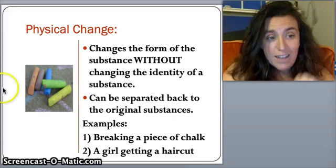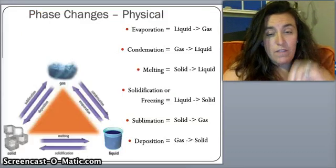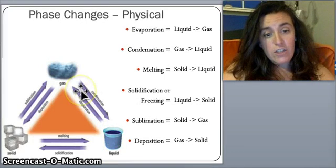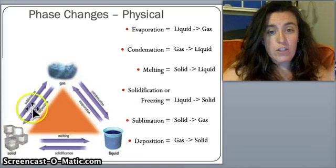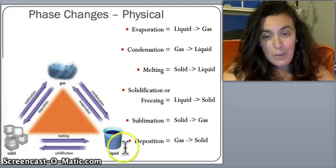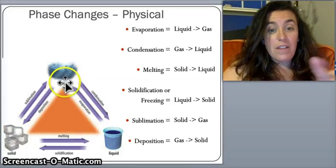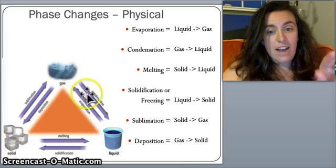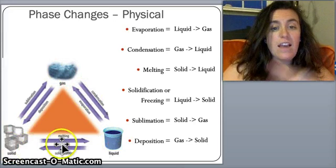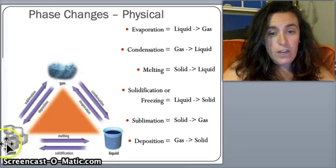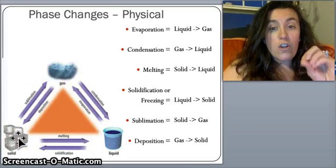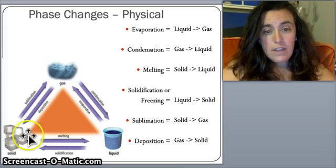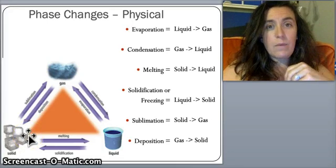Classic examples of physical changes are phase changes — whenever you're changing from a solid to a liquid, to a gas, or vice versa. Whenever you're going through the phase change pyramid, you're never actually changing the composition of that substance.